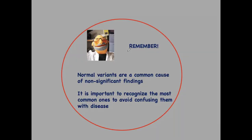In conclusion, to finish the first part: remember, normal variants are a common cause of non-significant findings and have to be known. It is important to recognize the most common ones to avoid confusing them with disease. I mentioned four, but there are several others you should know about.